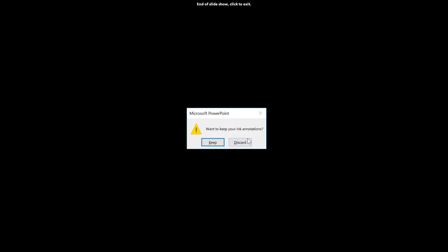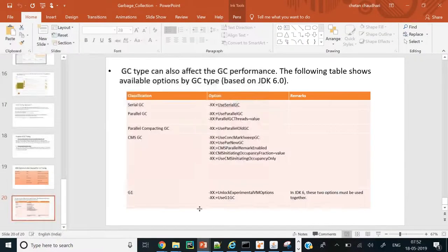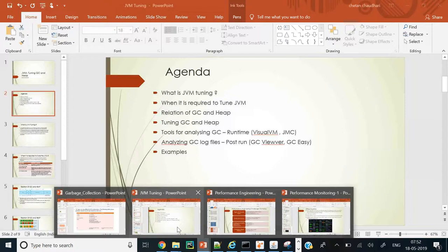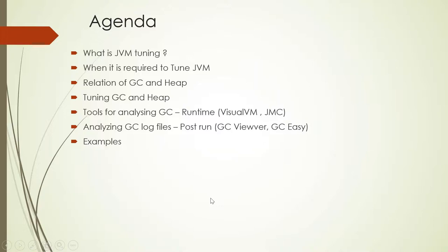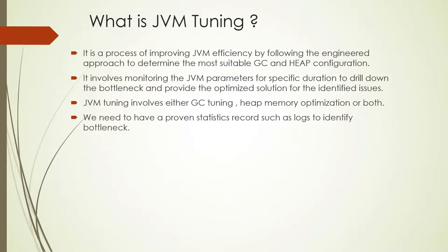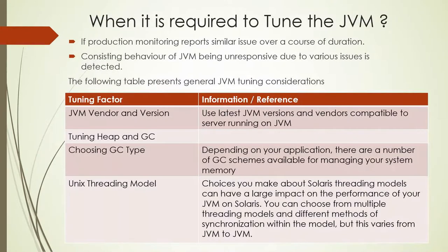The next session was about JVM tuning. We discussed what JVM tuning is and when it is required, the relationship of GC and heap, and different tools for GC and heap. JVM tuning is the process of improving your JVM's efficiency by taking a good internal approach and determining the suitable GC and heap configuration. We also saw the steps involved in JVM tuning and when it is required — for example, if production application monitoring reports issues over a course of time, like an application server hanging every 10 days consistently.